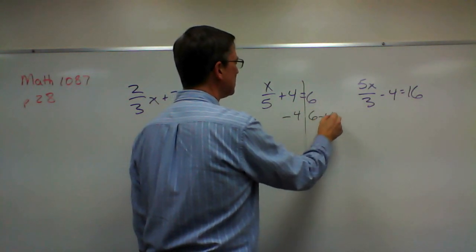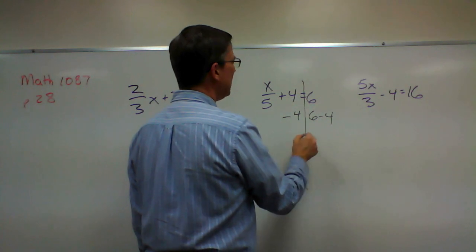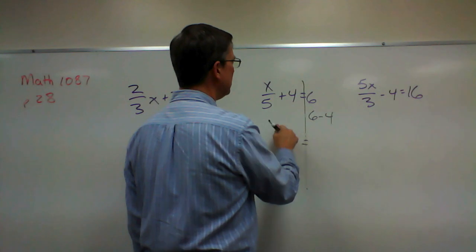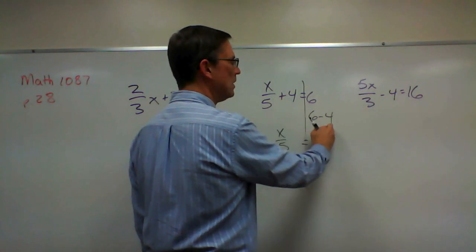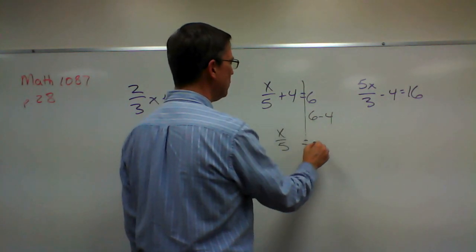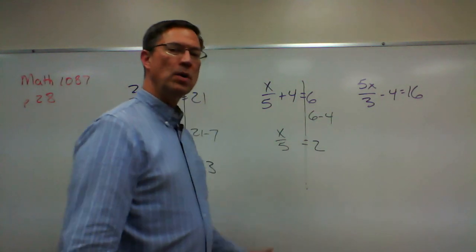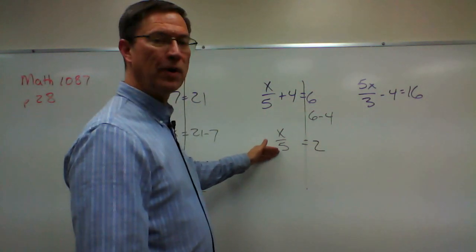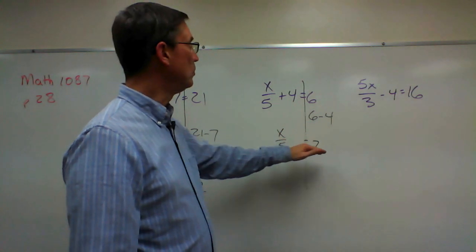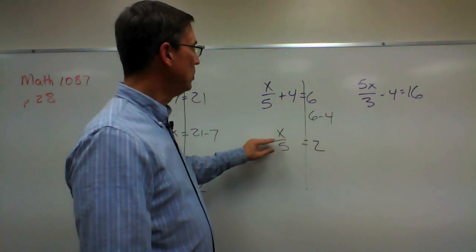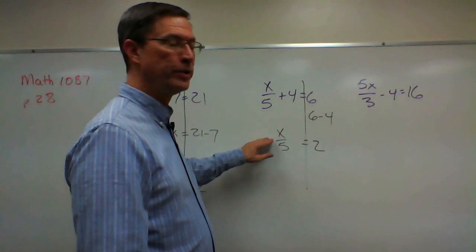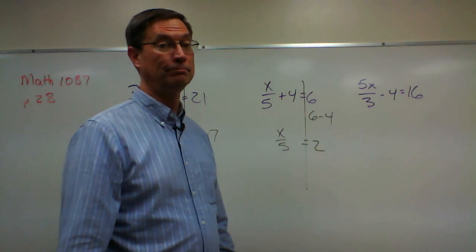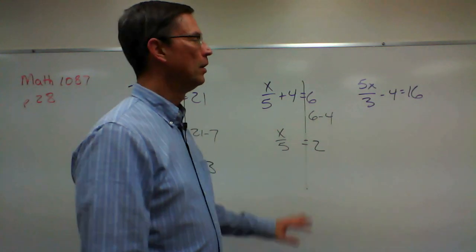Let's look at the next problem. We'll subtract 4 from both sides, bringing it over here, and end up with 6 minus 4. So now I have X over 5 equals 2. The next step: I have X divided by 5 equals 2, so we undo the division by multiplying both sides times 5. I'll let you finish that one.